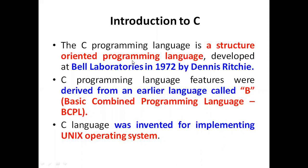C programming language was developed in 1972. Before C, there was a programming language called B, where B stands for Basic Combined Programming Language. They changed B into C. Just as Windows operating systems evolved from Windows 7 to Windows 10, the programming language also evolved through upgradations.